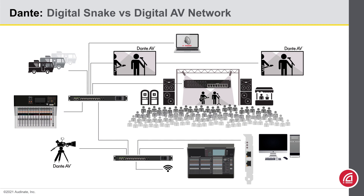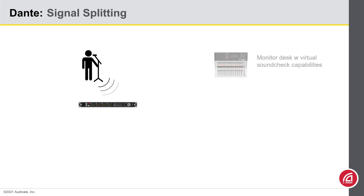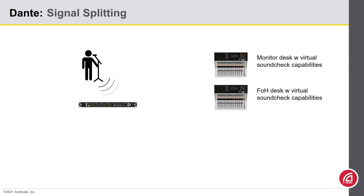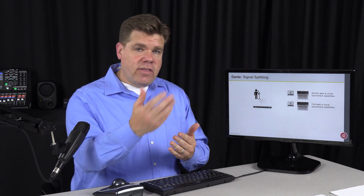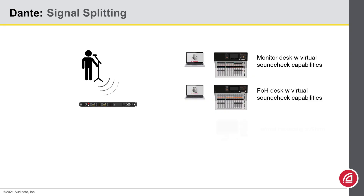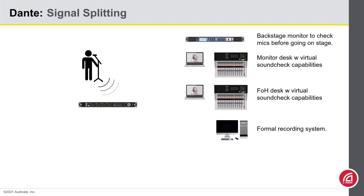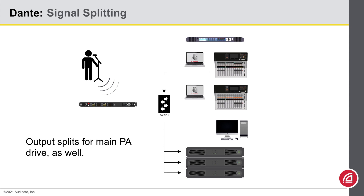Let's look at a few examples of how a network system will really benefit you. Starting with a wireless mic system, on the network we can split the signal for the monitor desk — mixing for the performers — and for front of house, where they're mixing for the audience. Each position would have a laptop for a virtual sound check, which means you record the sound check for about 10 minutes, send the band back to the green room, and then work off the recording to fine-tune your settings. We also have another system recording the event, and maybe a backstage monitor to check wireless functionality before someone goes on stage. That's a six-way signal split, and Dante can do this with ease. This also happens on the output side — the signal could go to several amplifiers on stage or around a facility for a distributed audio system.